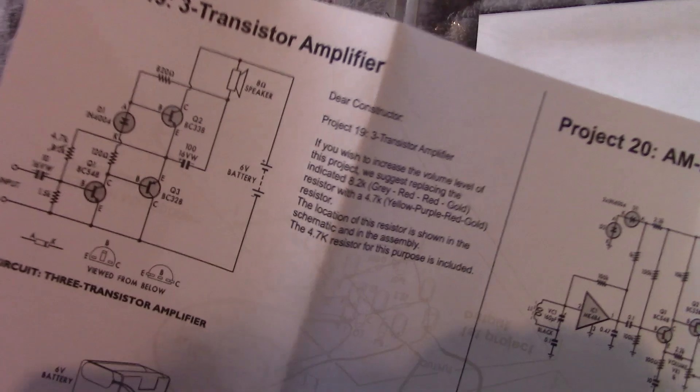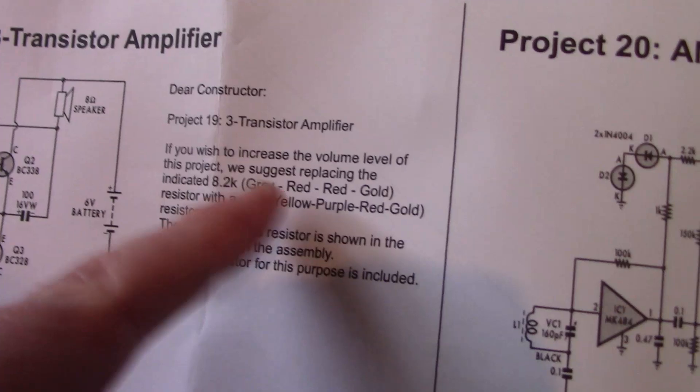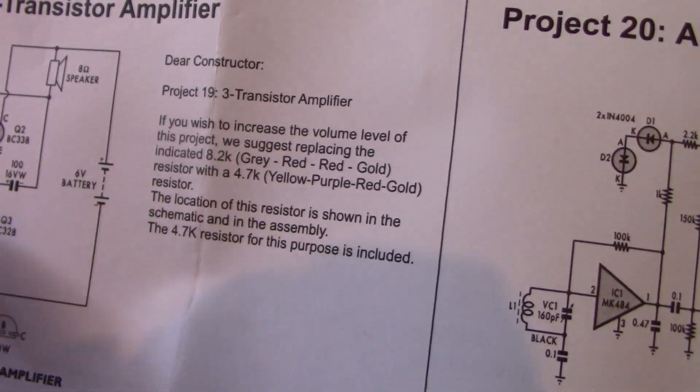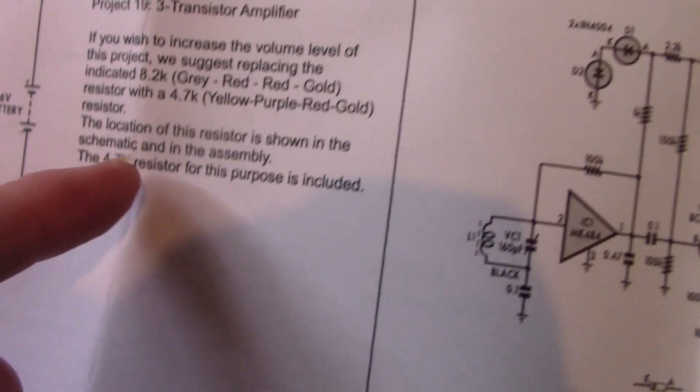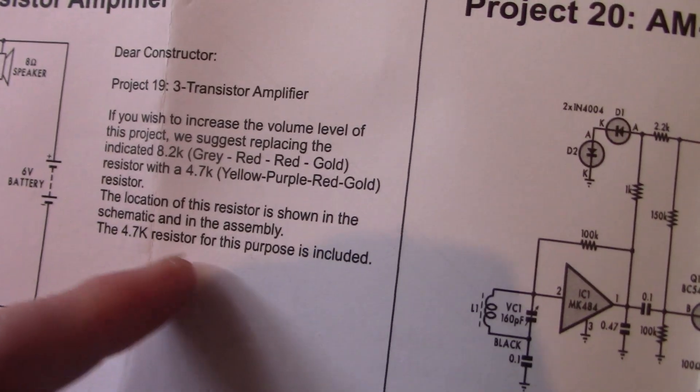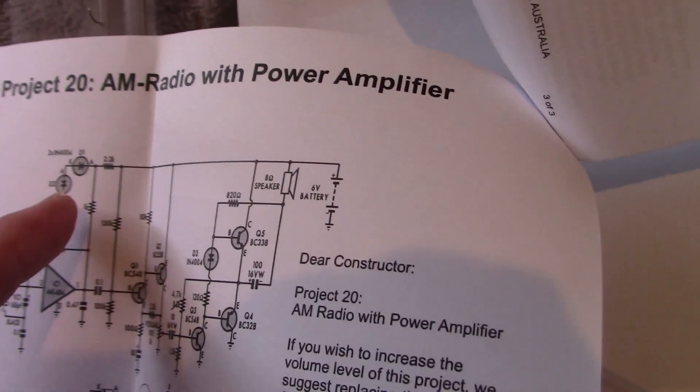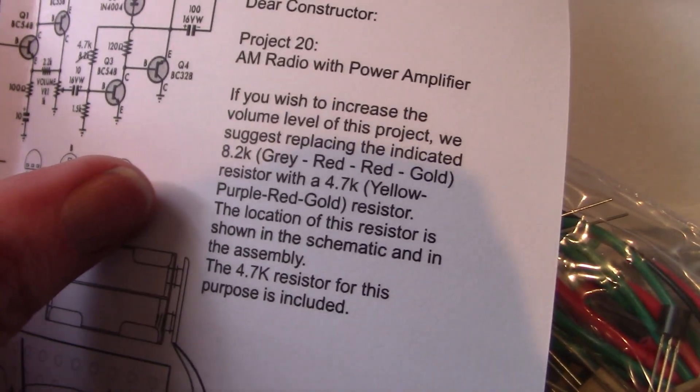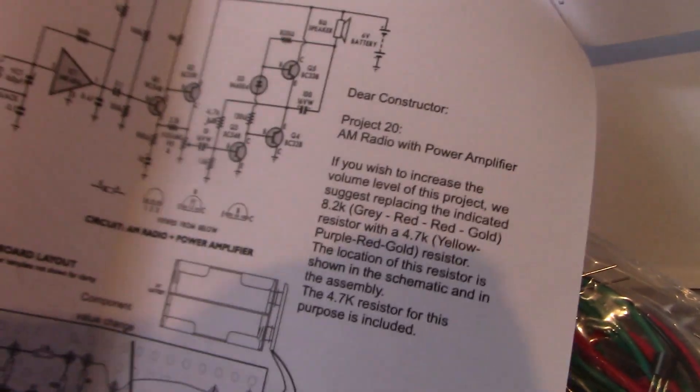There's a parts list in case you wanted to buy extra bits. Now we've got some circuits here - maybe these are modifications. Yes there are. This is for the three transistor amplifier - if you want to increase the volume we suggest replacing resistor, instead of 8.2k, 4.7k. So they have obviously had some afterthoughts and included the extra resistor. And here we are with the AM radio with power amplifier. Same deal, it uses same audio amplifier circuit, just a little modification there.